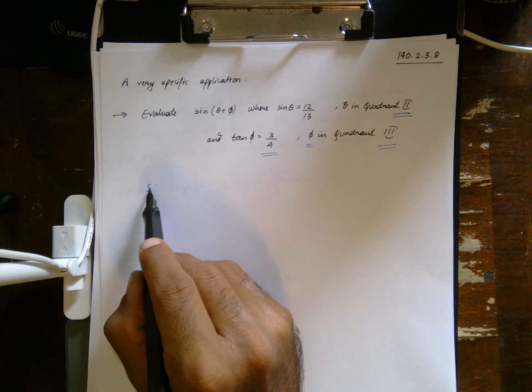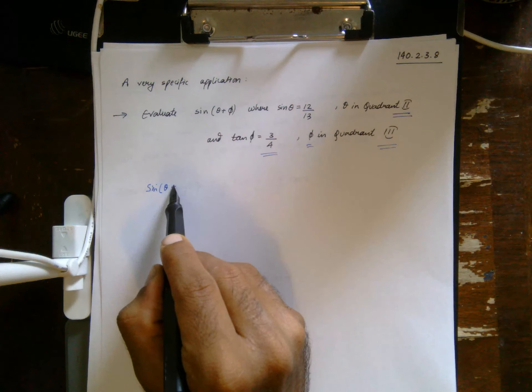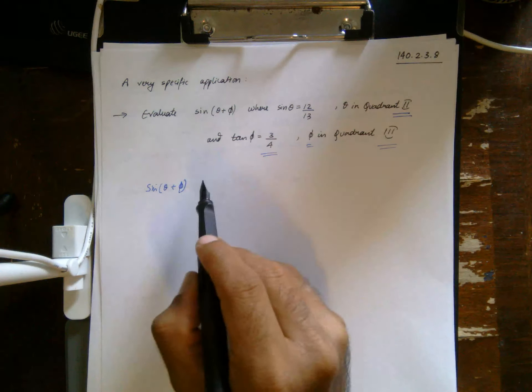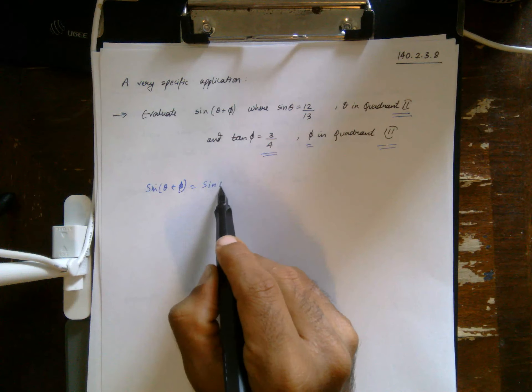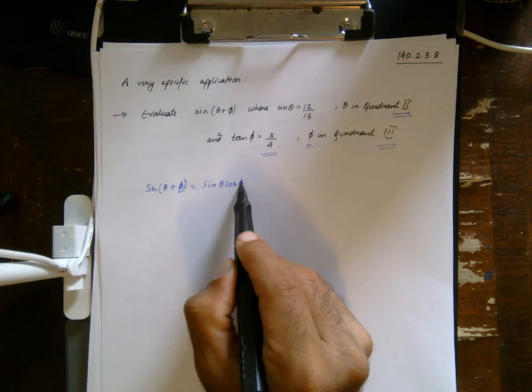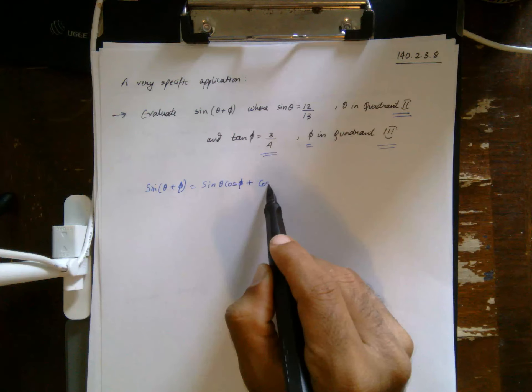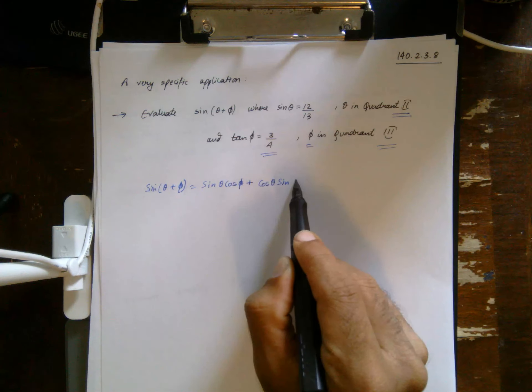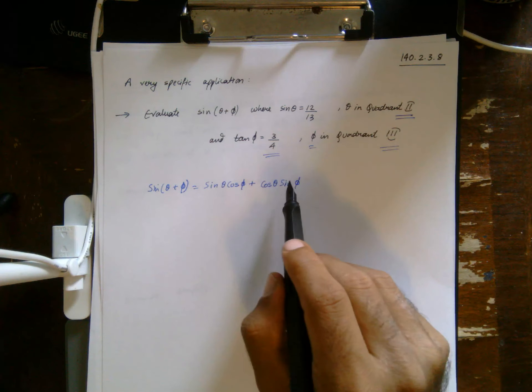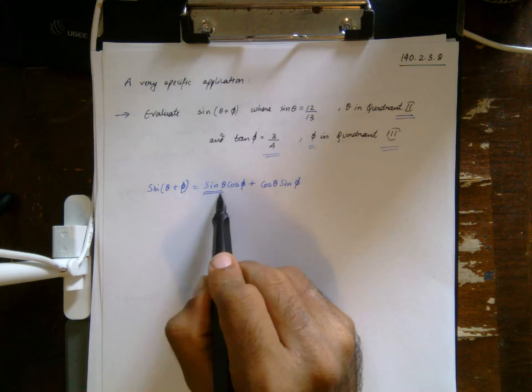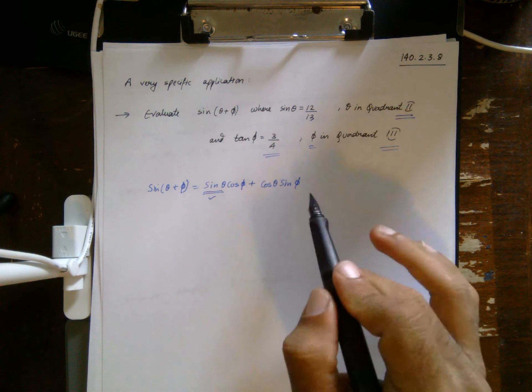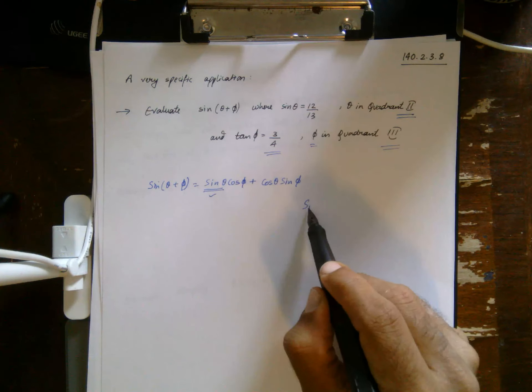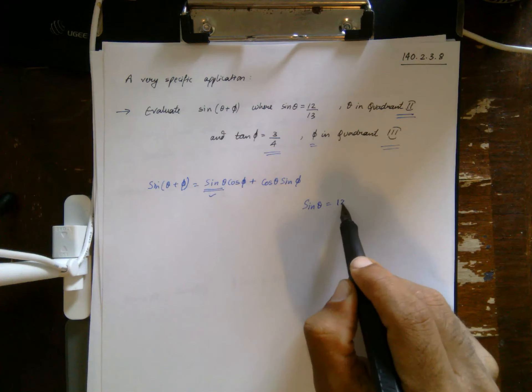Sine theta plus phi, again, it's just a plus b, right? So it's sine a cosine of the second thing, plus cosine of the first thing sine of the second thing. Now let's see what do we already know. We directly know sine theta, but nothing else.